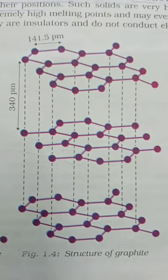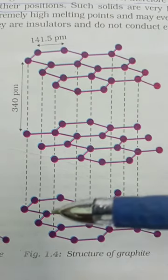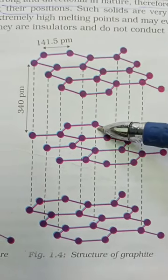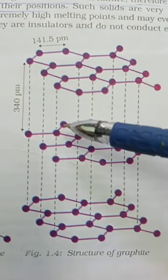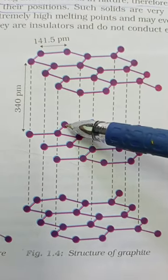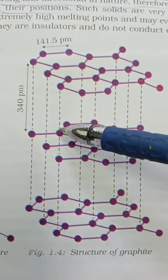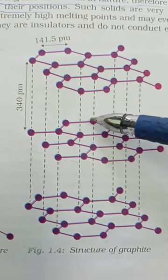In graphite structure, each carbon atom is arranged in different layers. In each layer, each carbon atom is covalently bonded to three of its neighboring carbon atoms.